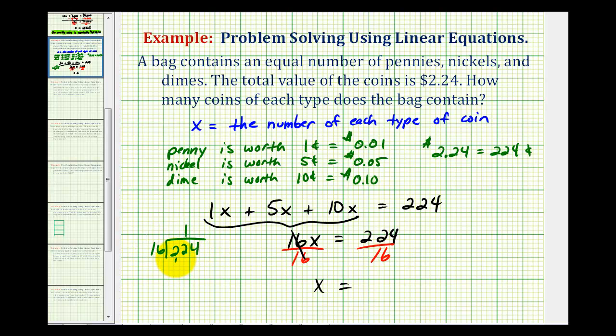There's one 16 in 22. Subtract that 6, bring down the 4. And there are four 16s in 64. Four times 16 is 64. The remainder is zero.